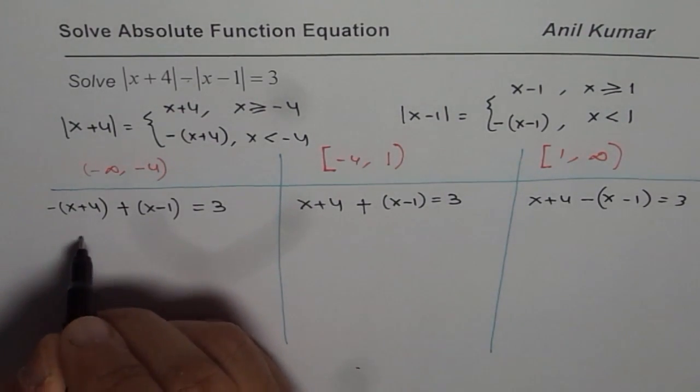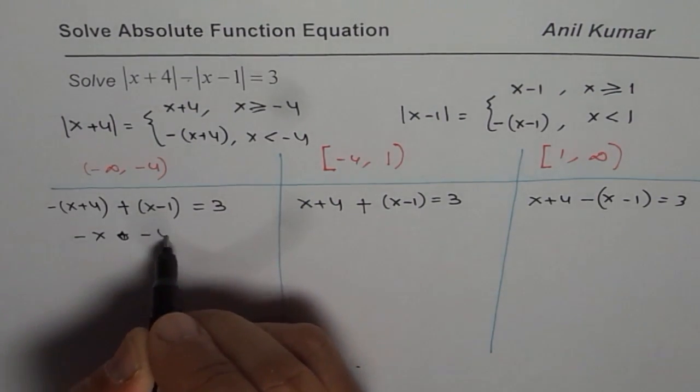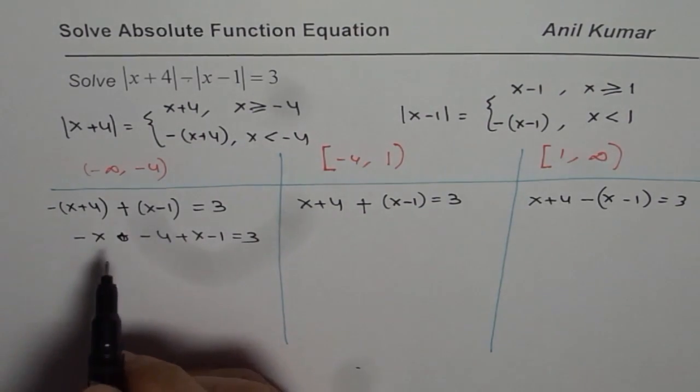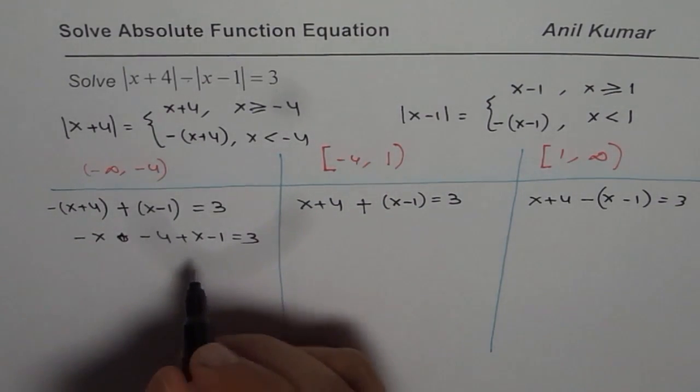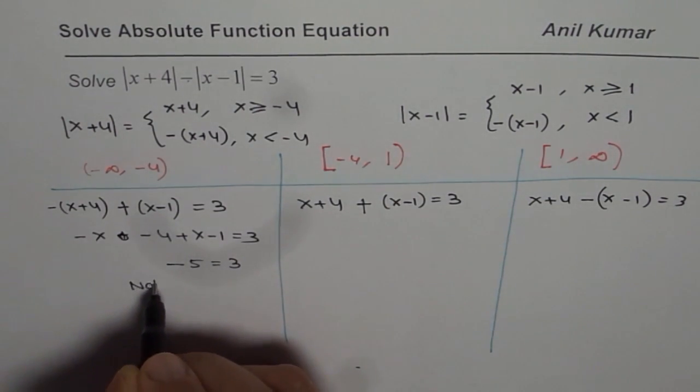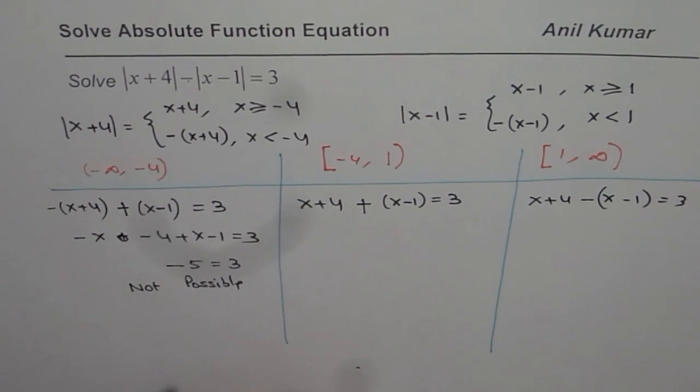When I solve the first equation, I get -x-4+x-1 = 3. This simplifies to -5 = 3, and that's not possible. So in this case, there is no solution.